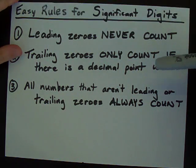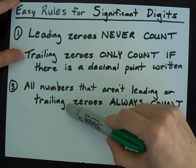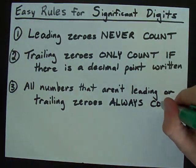Number three, all numbers that aren't leading zeros or trailing zeros always, always, always count.